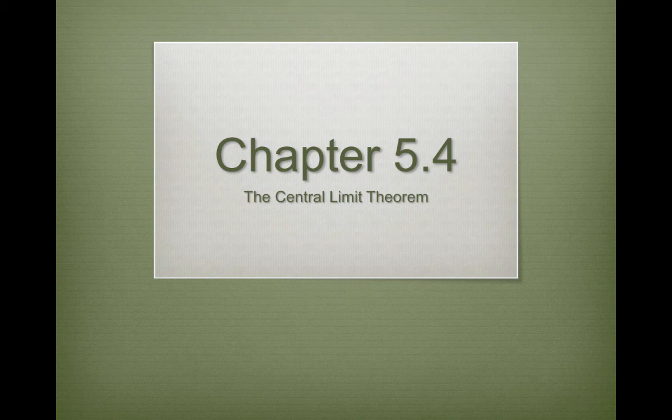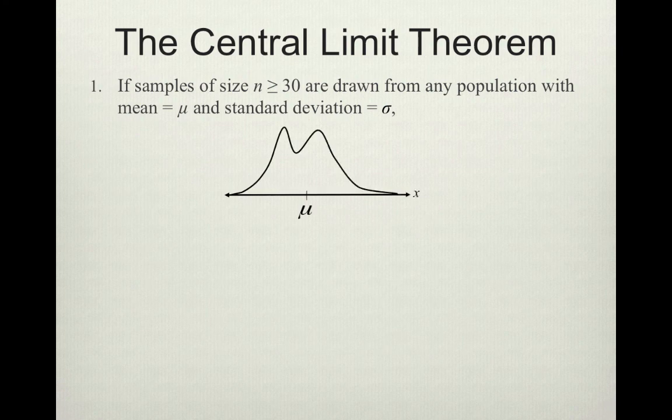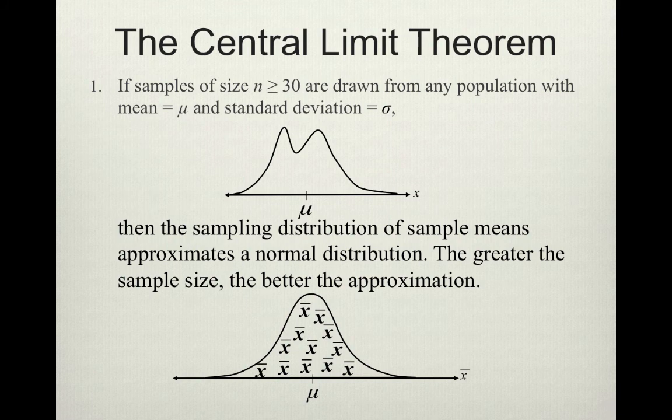You guys keep hearing me talk about the central limit theorem and how important it is. So let's begin the rest of this week's lecture talking about what the central limit theorem is. There are two components to it. The first component says that if samples of size n greater than 30 are drawn from any population with mean mu and standard deviation sigma, then the sampling distribution of sample means approximates a normal distribution. The greater the sample size, the better the approximation.